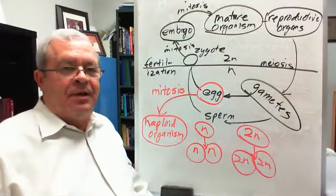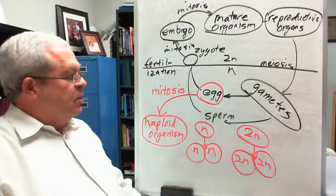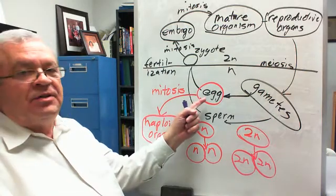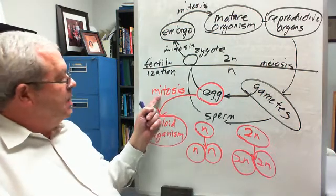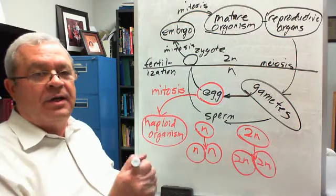Alright, parthenogenesis. What's an example of parthenogenesis? What's an example of a time or situation in which an egg divides by mitosis to produce a haploid organism?